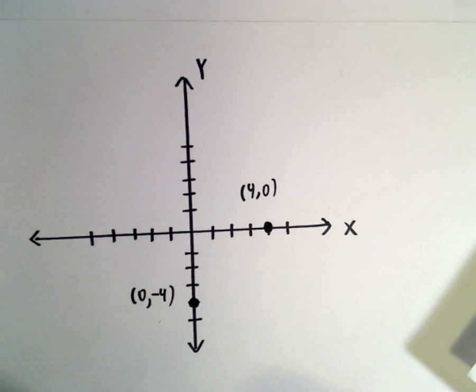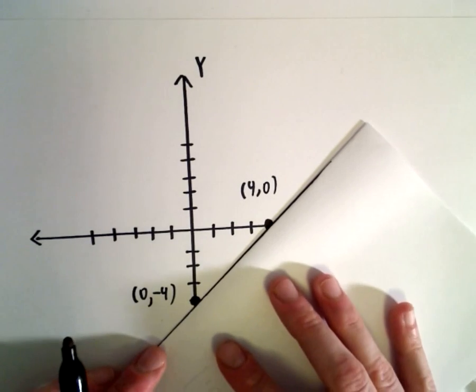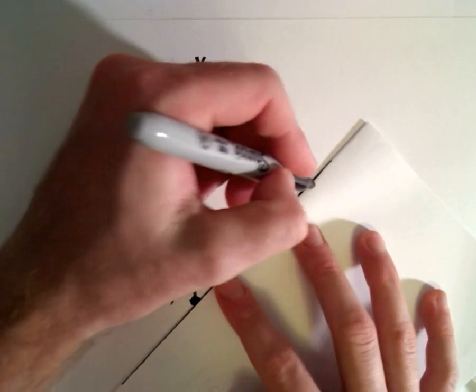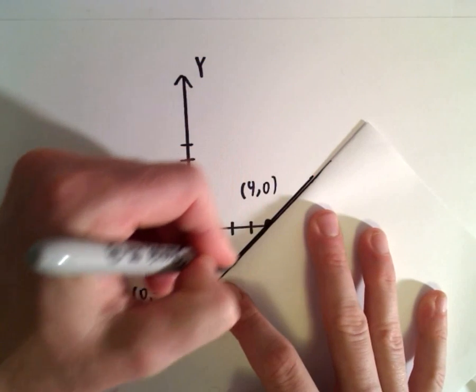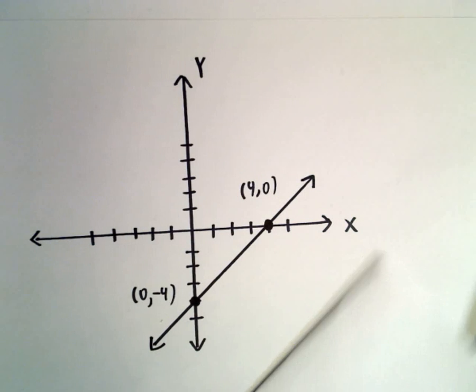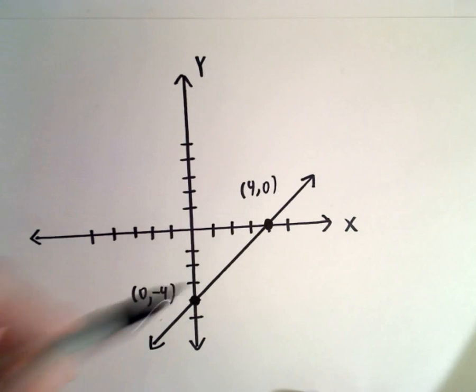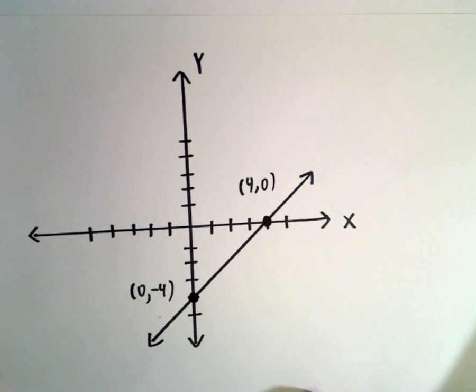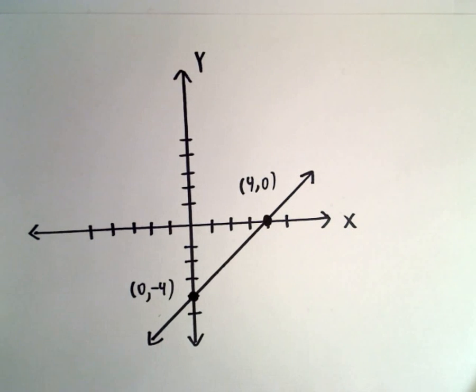There's (0, negative 4), and now all we have to do is play connect the dots and we'll get our graph of our linear equation. So there's our line, and that's all there is to it. So finding x and y-intercepts is often a nice, pretty convenient way to graph lines.